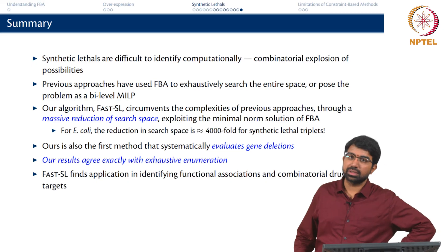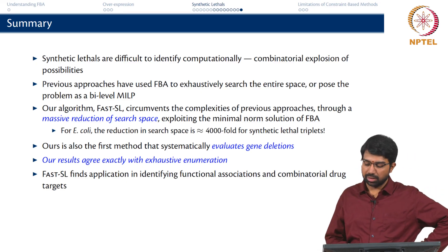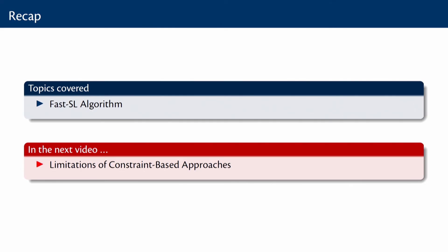You might find obscure functional associations: three genes in different pathways could be involved together because they participate in the production of the same metabolite. Also remember that synthetic lethals are environment-specific — all these were done in minimal glucose medium, but we can compute synthetic lethals in any different environment. In today's video, I hope you got a good overview of the Fast SL algorithm, which exploits alternate optima of FBA to slice through the search space and solve only 1 in 4000 simulations for triple gene deletions. In the next video, we will start winding up constraint-based approaches by looking at their limitations.